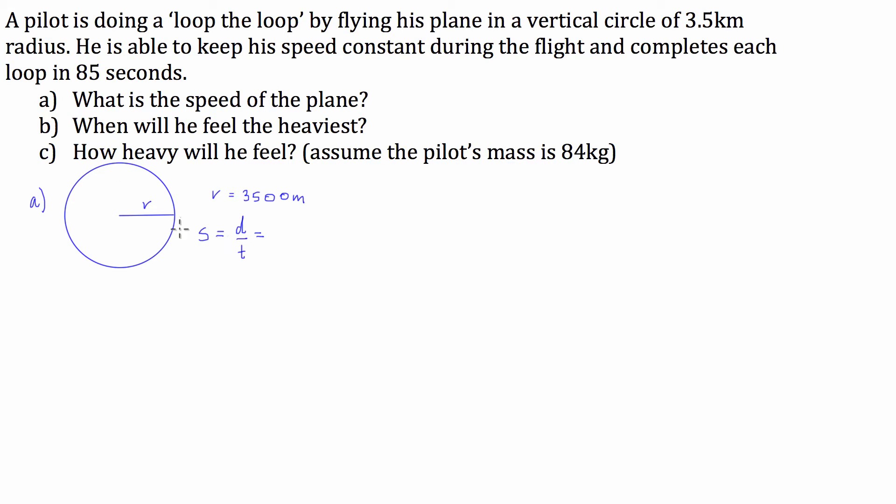Now, the distance that's going to be covered by the plane in this circle is going to be the circumference of the loop-to-loop. So circumference is 2πR, and the time is just the period that it takes to go through one rotation. Now, we can just sub in the values that we've been given, so we have just 2π times 3,500 over 85.